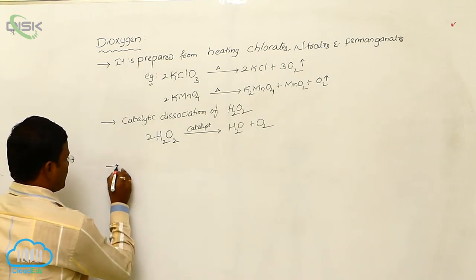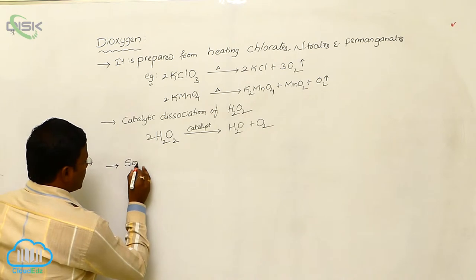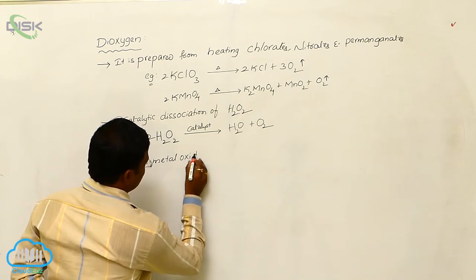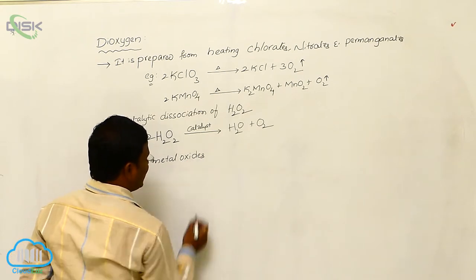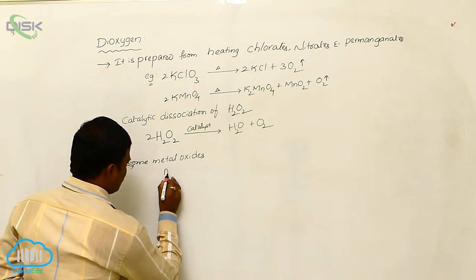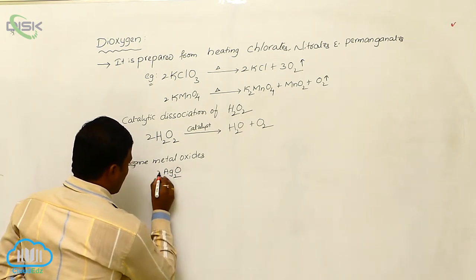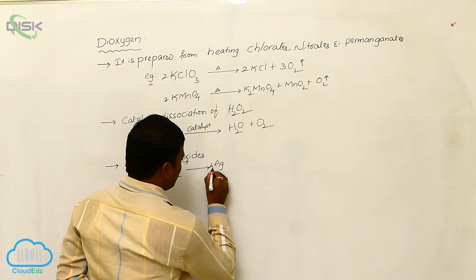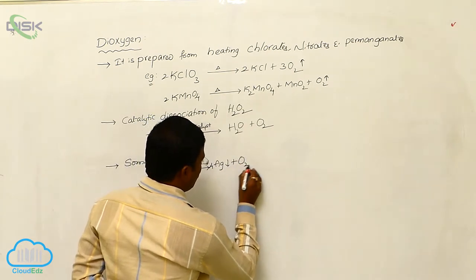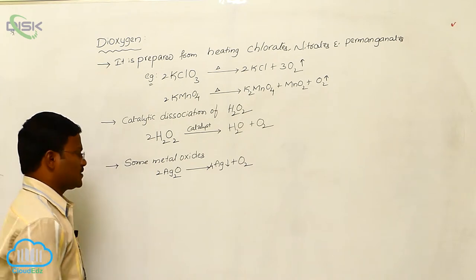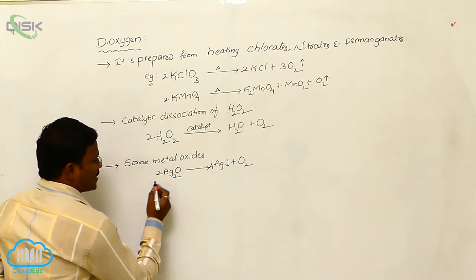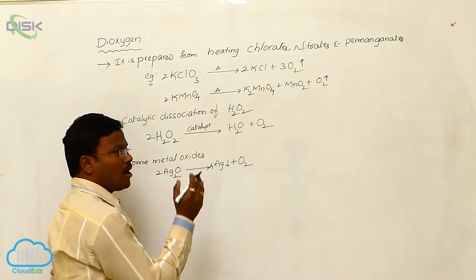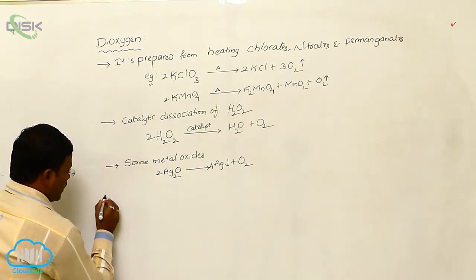Similarly, some metal oxides upon heating also produce Dioxygen. For example, silver oxide, by decomposing, yields the production of oxygen gas or Dioxygen. Some more metal oxides upon decomposition also release Dioxygen or oxygen gas.